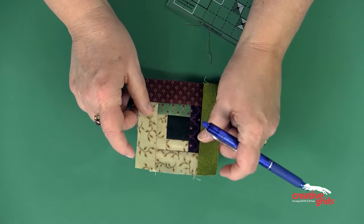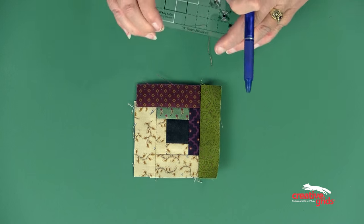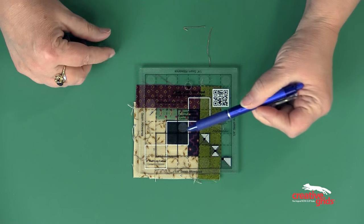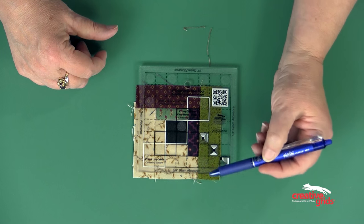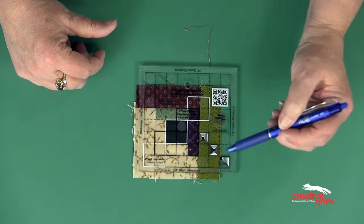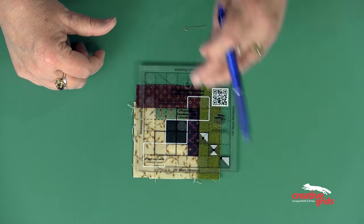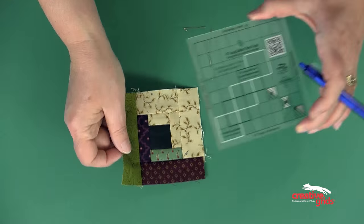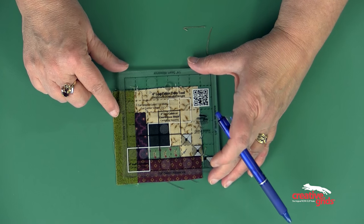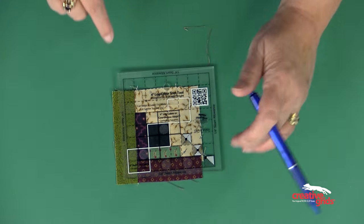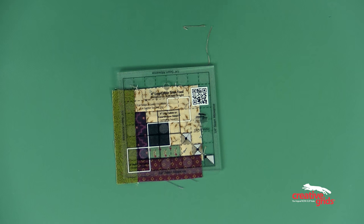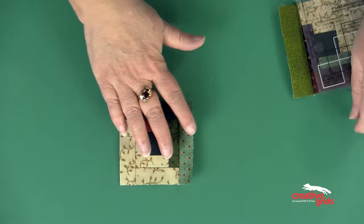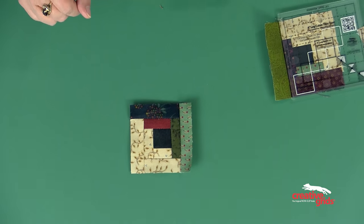I'm going to repeat the process and sew on two more lights and two more darks. This time I'll move down to the white square in the center of the ruler and I'm going to line this up. If you notice, the dash lines are lining right up with the seam lines. Again, I'll trim two sides, flip it, put the white square back in the middle, and trim the other two sides. And now I have a perfect log cabin, and once again all my logs are the same width.